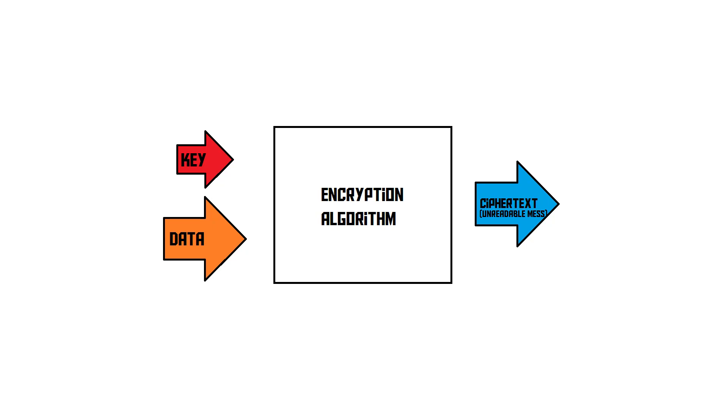We have information and we feed this information into an encryption algorithm, which is the program that does the encryption. We also come up with a secret key, which is basically a little string of text that also goes into the algorithm. The algorithm then uses this key to encrypt the data in a certain way and turn it into an unreadable mess. The only way to undo this and get the original data back from this mess is if you also have that key.